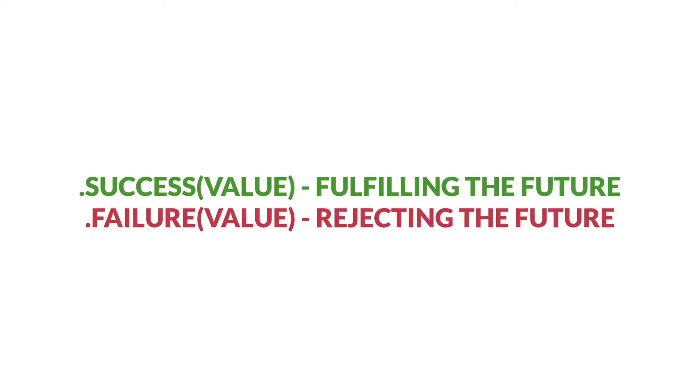Promise is essentially a closure that accepts a single result parameter. In Combine's realm, future is a publisher. Future obeys all publisher laws and supports all operations with a publisher. With a promise we initialize the future. We can fulfill the future and pass a success parameter to the promise, or we can reject a future when passing an error to the promise.